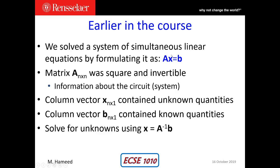Earlier in the course, we had a matrix formulation of AX equals B, in which we were writing down simultaneous linear equations obtained by applying nodal analysis to a circuit. We formulated that as a matrix problem, AX equals B. In this case, A was a square matrix where the number of rows equals the number of columns, small n by small n. This matrix was square and invertible, and it essentially contained the information about the circuit or system.